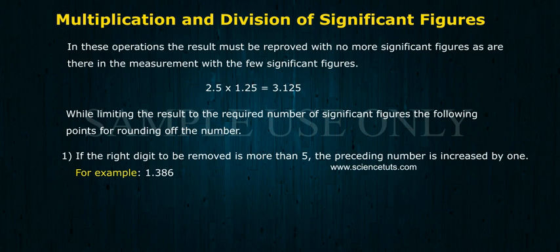Rounding Rule 1: If the rightmost digit to be removed is more than 5, the preceding number is increased by 1. For example, 1.386.